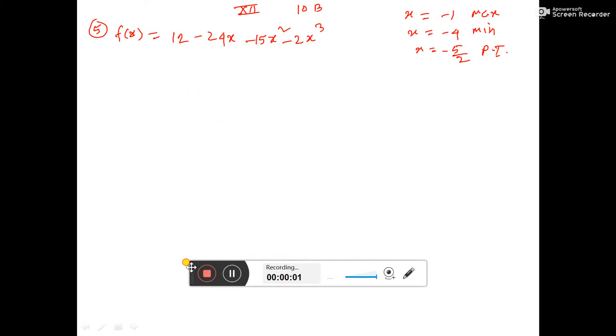So, this is the function given and we have to show that in this function we will get maximum value at x equal to -1, minimum value at x equal to -4, and we will get point of inflection at x equal to -5/2.